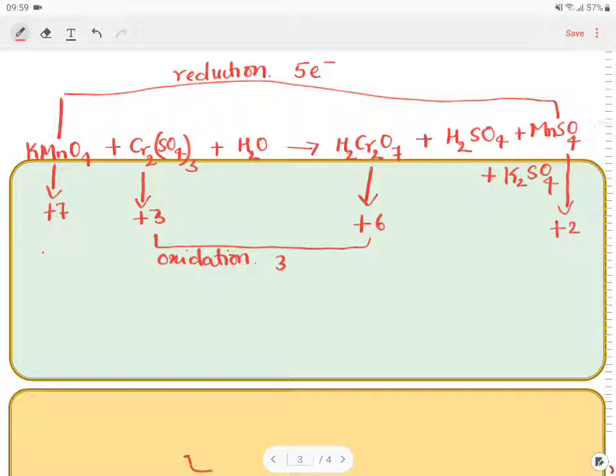This is for 1 chromium. On both the sides, we have 2 chromium. Therefore, multiply this with 2. So we get 6. 6 electrons.